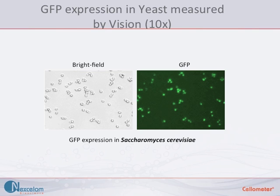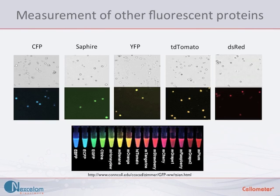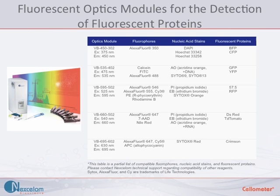Not only can the Cellometer detect GFP and RFP expression, but it can also detect and analyze any fluorescent protein within the UV to far-red spectrum. The Cellometer interchangeable fluorescence optics modules are optimized for detection of various fluorescent signals. These fluorescent optic modules are not only used to measure fluorescent proteins, but they are also capable of measuring enzymatic dyes, Alexa Fluor dyes, and DNA-binding dyes.